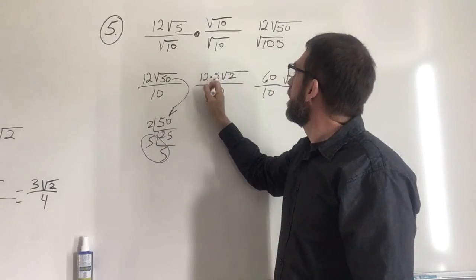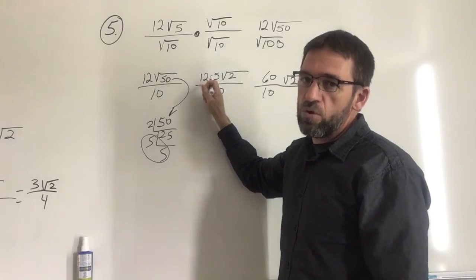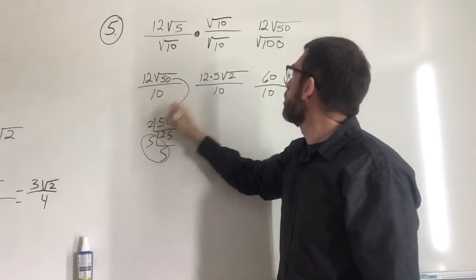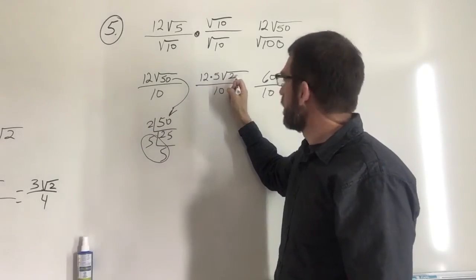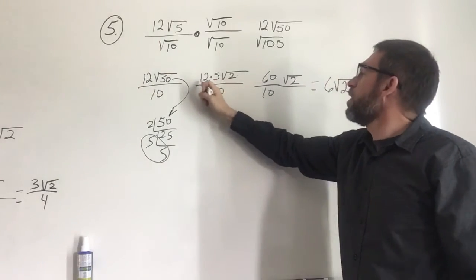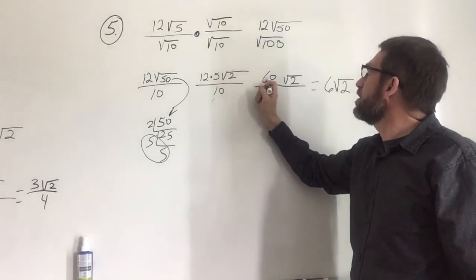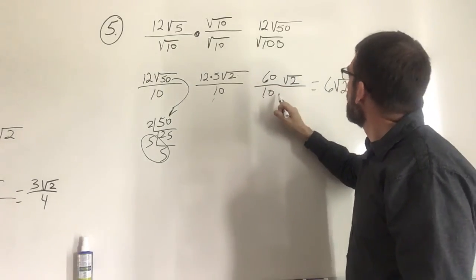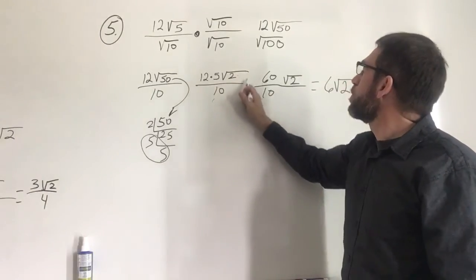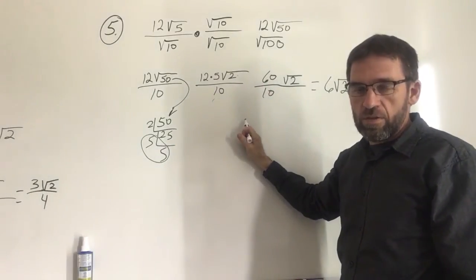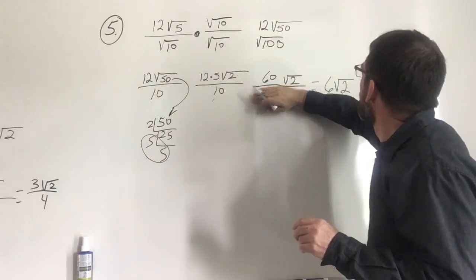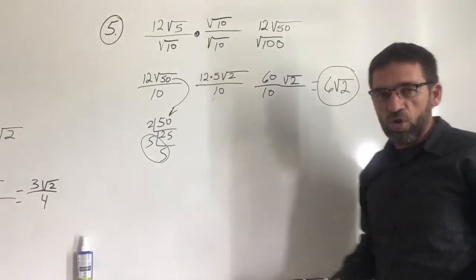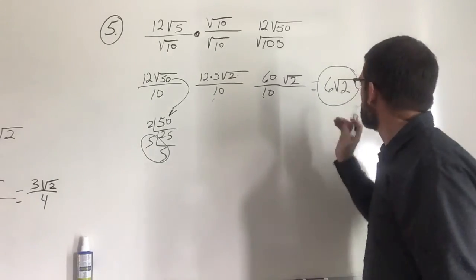I have a double 5, so I pull the 5 out with the 12. Remember you don't add them — you multiply: 5 times 12. Then I had a 2 left, which goes inside the radical sign, with 10 still on the bottom. So 5 times 12 is 60, leaving me with 60 radical 2 over 10. Ten goes into 60 six times, erasing the whole bottom number, and that equals 6 radical 2. Number 5 works all the way down to 6 radical 2.